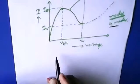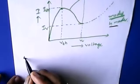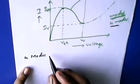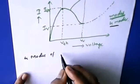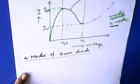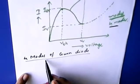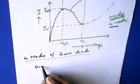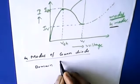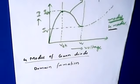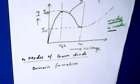Before going to the modes, we are going to discuss about the four modes of Gunn diode operation. What are all the four modes we are going to discuss? Before going to discuss about the four modes, we need to understand the concept of domain formation.